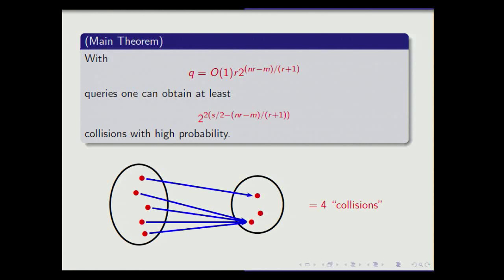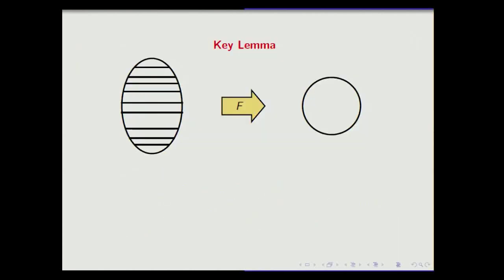A word on how we count collisions: rather than the standard pairwise count, we count the number of points in the domain that collide with something else — so four colliding points rather than 'four choose two' pairs. This is always a lower bound for pairwise collisions, so we're being stricter on ourselves. An elementary observation: this number of collisions is always at least the size of the domain minus the size of the range, since every non-colliding element takes up one range element for itself.